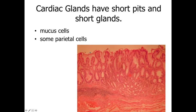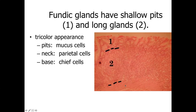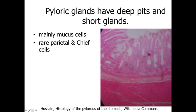The cardiac glands have short pits and short glands, a relatively short mucosa, predominantly mucus cells, and maybe an occasional parietal cell. The fundic glands in the body of the stomach have shallow pits, mucus-secreting cells in the pits, and relatively long glands — a thick mucosa with a tricolor appearance: pale staining mucus cells, pinkish parietal cells in the neck region, and bluer chief cells toward the base. The pyloric region has relatively deep glands and short pits, mainly mucous cells with pale staining, and rare parietal and chief cells.